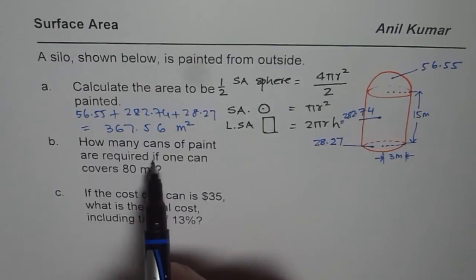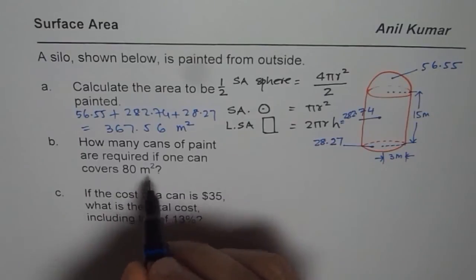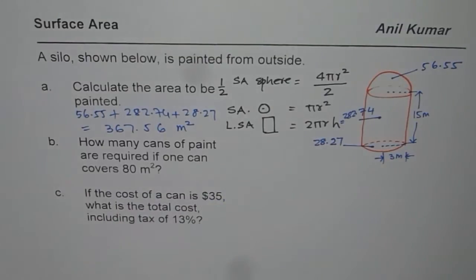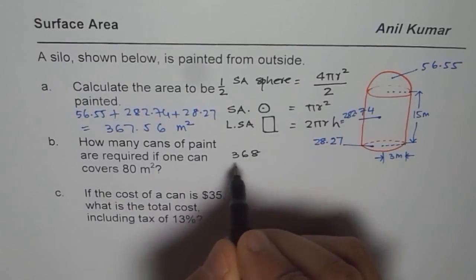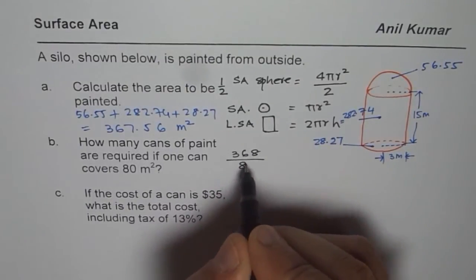How many cans of paint are required if one can covers 80 meters square? You have to divide this by 80. So divide 367.56 by 80.